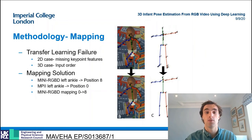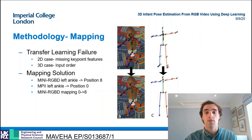During the development of the pose estimation models, the transfer learning step was failing. The reasons for this were subtle. In the 2D case, the adult MPII dataset had fewer key points than the mini RGBD infant dataset. Therefore, learning these missing key points dominated the fine-tuning process and due to the lack of infant data had limited success.